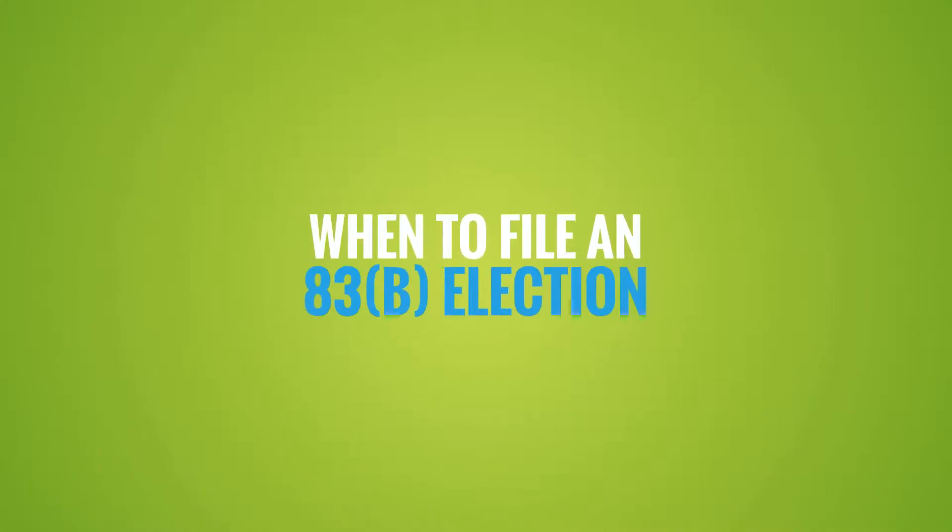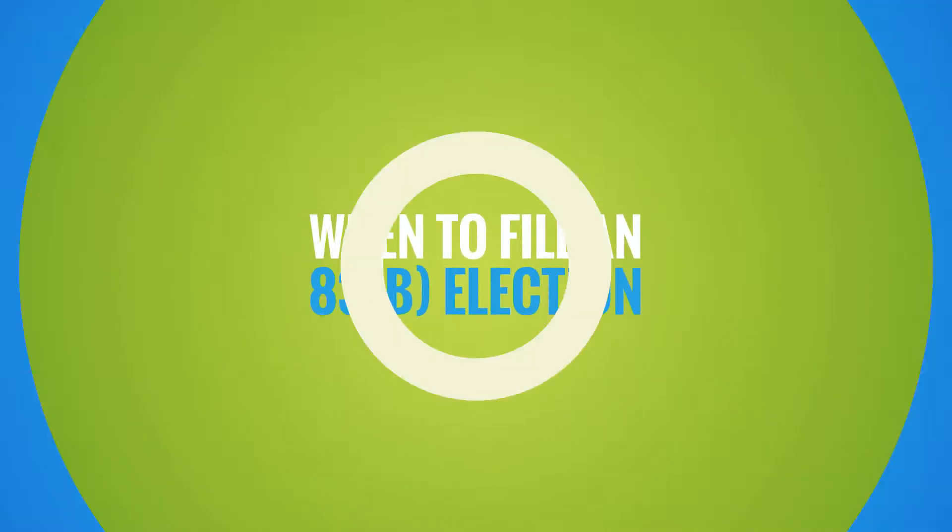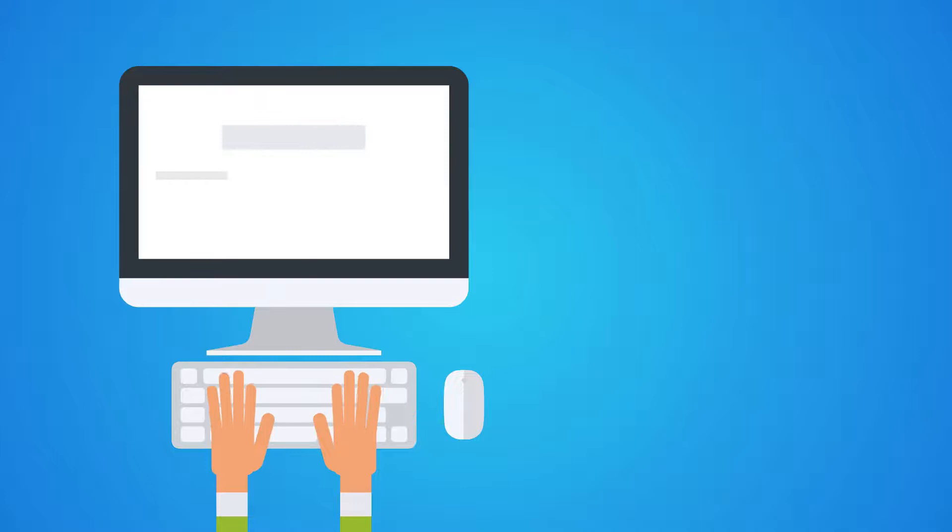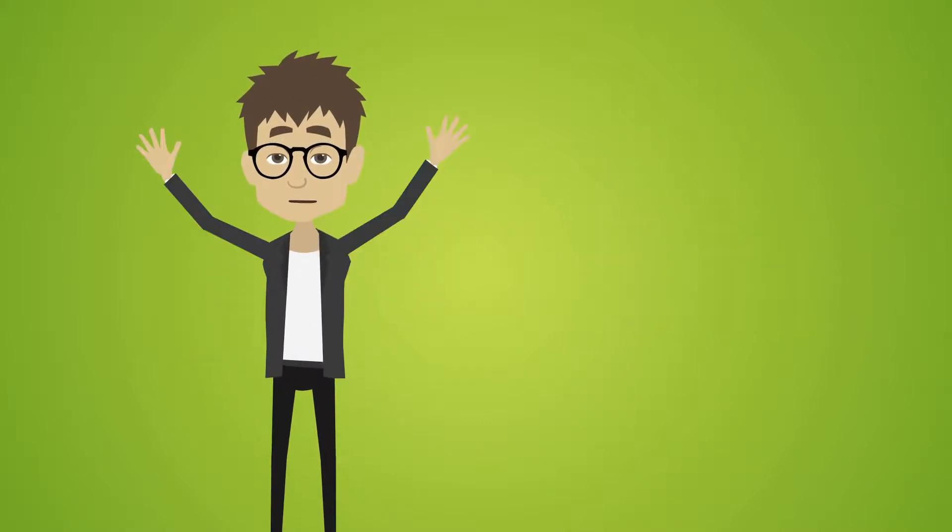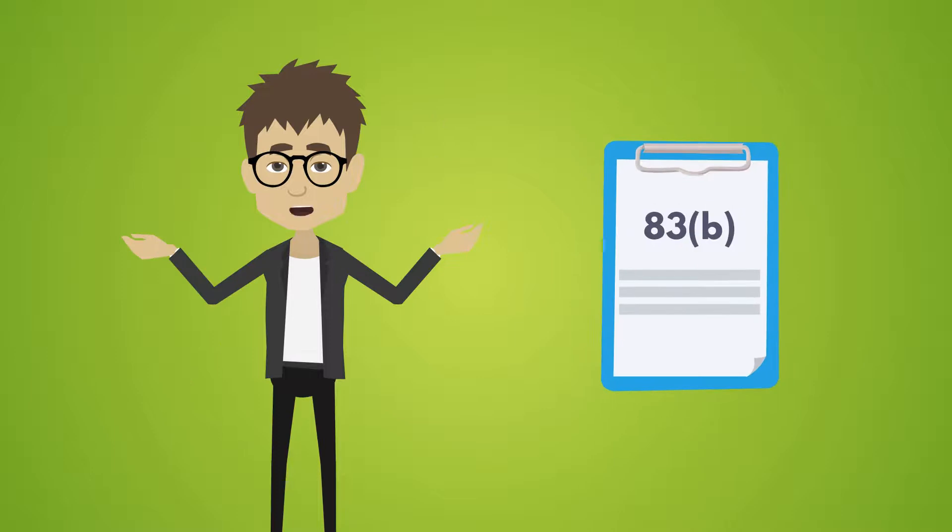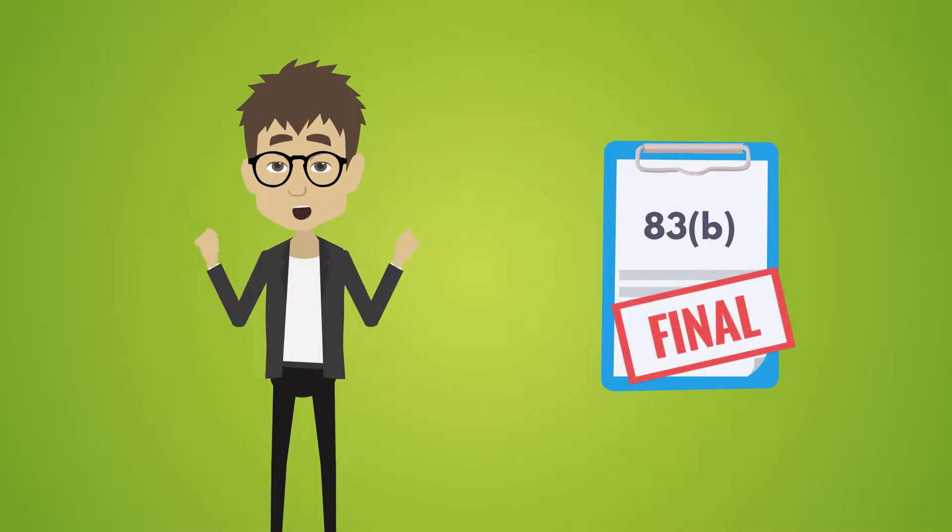When to file an 83B election? Your 83B election must be submitted within 30 days of receiving restricted shares or early option exercise. If you don't, company shares vest as ordinary income. Making an 83B election is typically final, so weigh your options carefully.